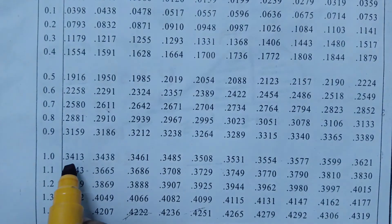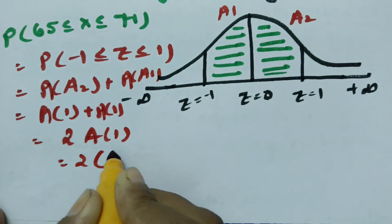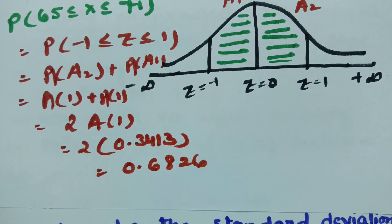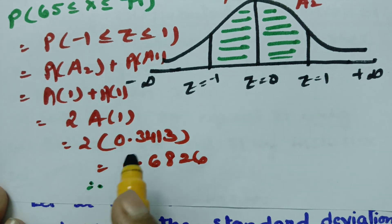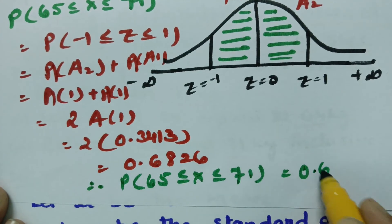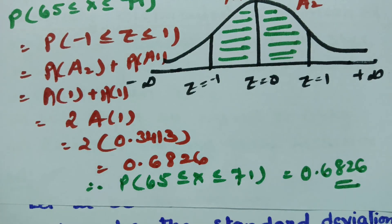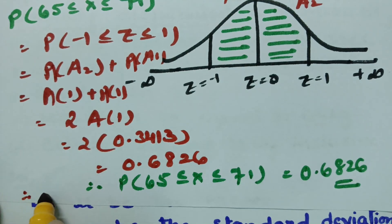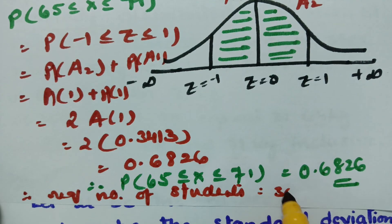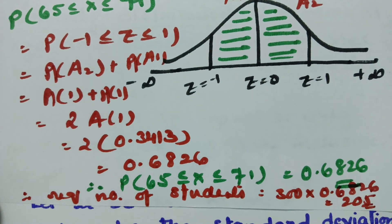The area from 0 to 1.0 from the z-table is 0.3413. By symmetry, the total area is 2 times 0.3413, which equals 0.6826. Therefore the probability between 65 and 71 is 0.6826. The required number of students is 300 multiplied by 0.6826, which is approximately 205 students. Thank you so much for watching.